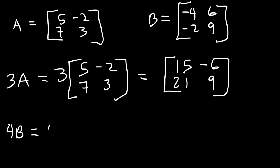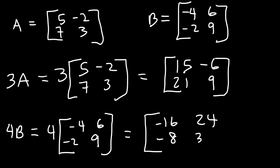So for 4B, it's just going to be 4 times all of the elements in matrix B. So 4 times negative 4, that's negative 16, 4 times 6 is 24, 4 times negative 2 is negative 8, 4 times 9 is 36. And that's scalar multiplication.